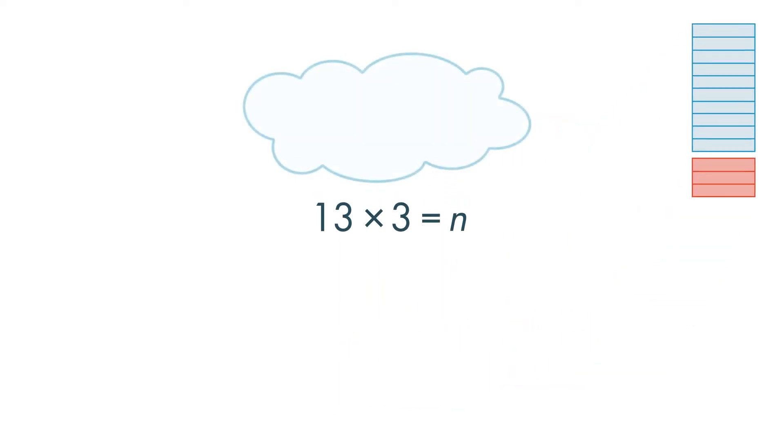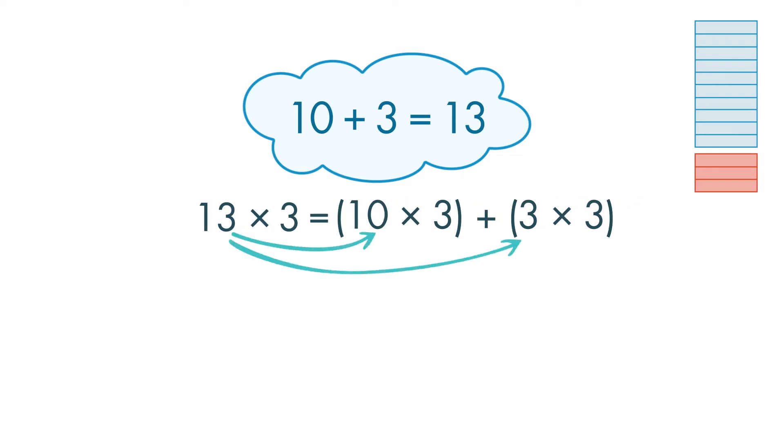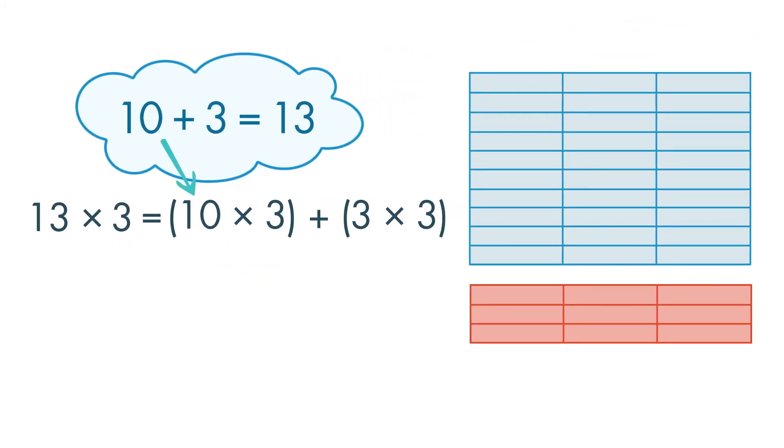Because we have simple rules for multiplying by 10, we can use 10 plus 3, which is equal to 13. Now we just need to distribute or share so both numbers get multiplied by 3. We can rewrite the problem as 10 times 3 plus 3 times 3.